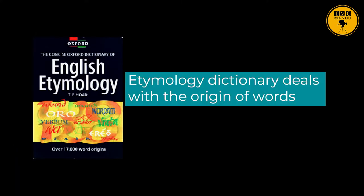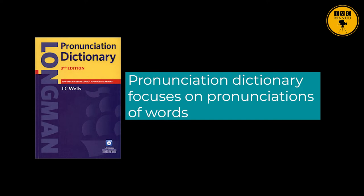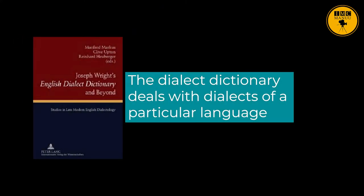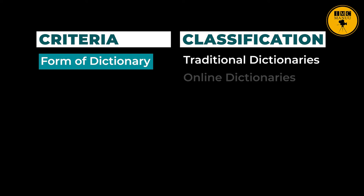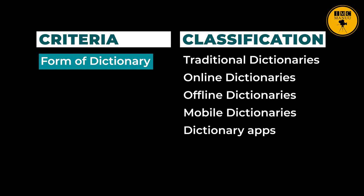Etymology Dictionary deals with the origin of words. Pronunciation Dictionary focuses on pronunciations of words. Dialect Dictionary deals with dialects of a particular language. According to the form of dictionary, the types are Traditional Dictionaries, Online Dictionaries, Offline Dictionaries, Mobile Dictionaries or Dictionary Apps, and Picture Dictionaries.